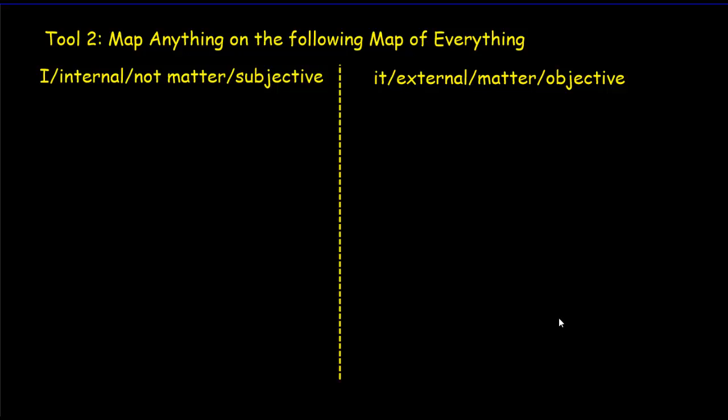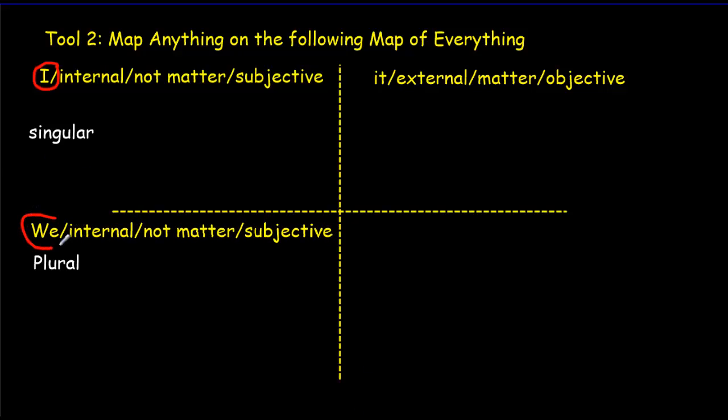So my first division is very, very simple between internal and external. My second division is going to break the map of everything up into four quadrants. And the two rows are going to represent the singular and the plural. So if this internal quadrant, I can call it the I quadrant because it's about the internal of an individual in the singular. This quadrant below, it's going to be the we quadrant because it's going to be talking about the internal life of a society. That is the culture and the shared values within that society.